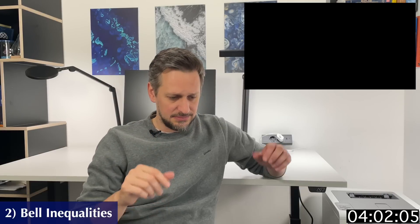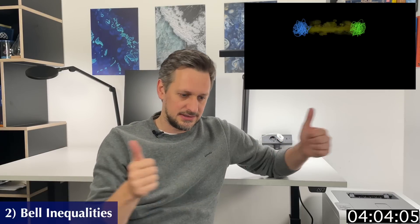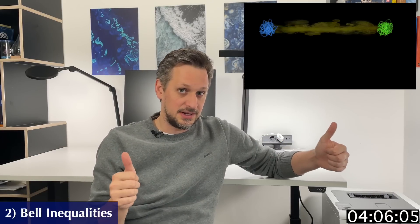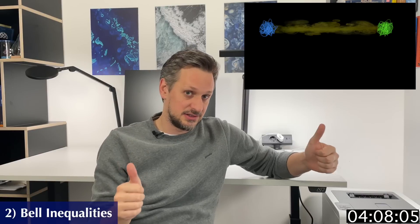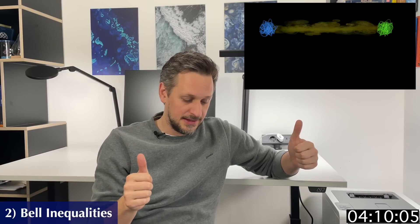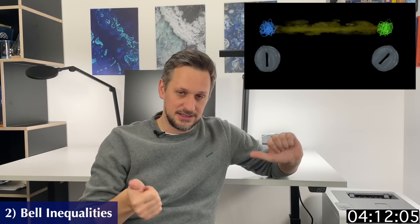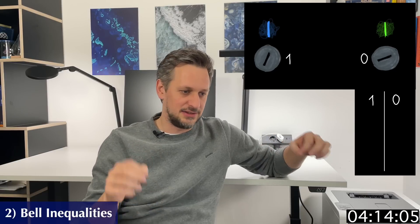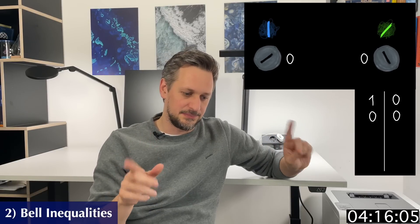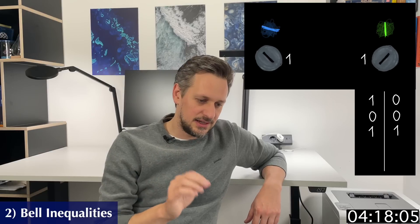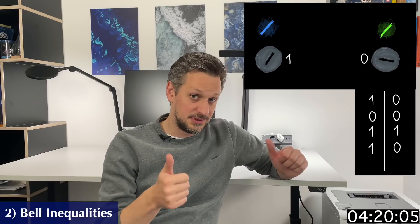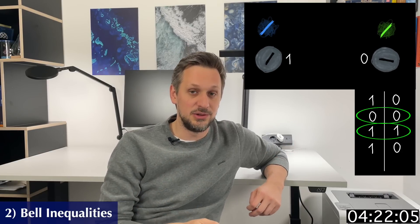The basic idea is very simple. You take two entangled particles, separate them so far apart that they cannot influence each other at the speed of light. And then you measure them in different directions. So for example, you take photons and you measure their polarizations. And then you analyze how well these results agree. So the so-called correlation.